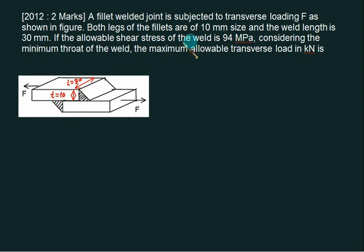The allowable shear stress of the weld is 94 MPa. Calculate the maximum transverse load considering the minimum throat area, which is 0.707. So we have F equals 2 times 0.707 times T multiplied by L multiplied by tau allowable, because it's double transverse.